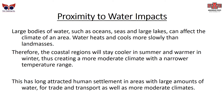Proximity to water — such as oceans, seas, and large lakes — can also affect climate. Water heats and cools more slowly than land masses do. Therefore, coastal regions will generally stay cooler in the summer and warmer in the winter, creating a more moderate climate with a narrower temperature range. This has long attracted human settlement in areas with large amounts of water, offering trade, transport, and more moderate climates.